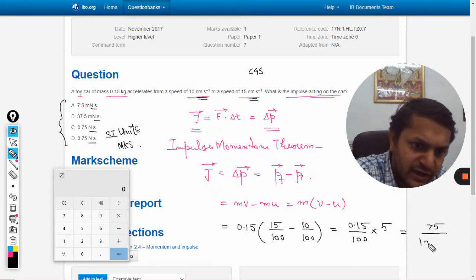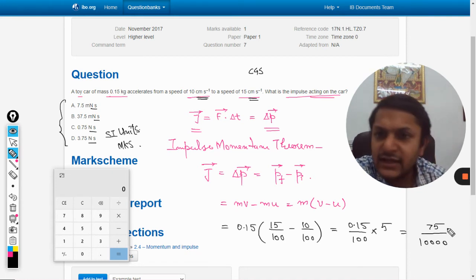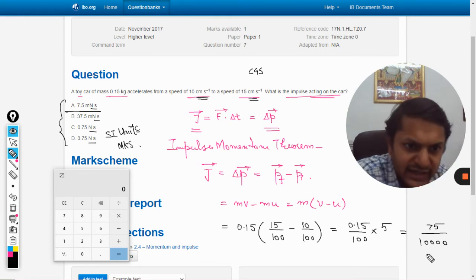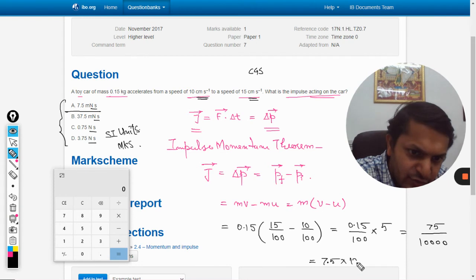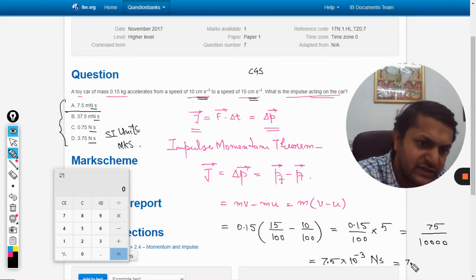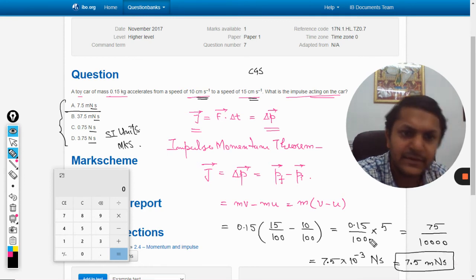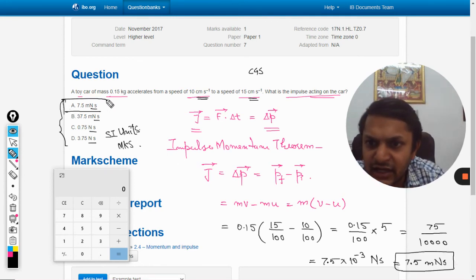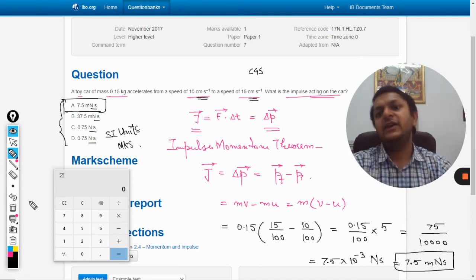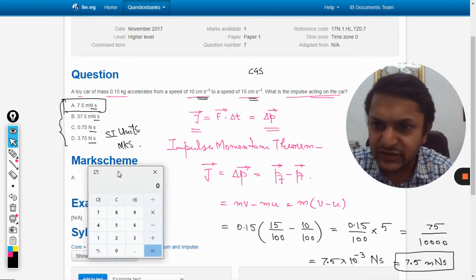75 divided by this, so I think answer will be A, 7.5 milli. So this can be taken as 7.5 into 10 raised to the power minus 3 in SI units, which are newton second. So we can always say the answer will be 7.5 milli newton second. And yes, the answer will be A. We can verify now what is the answer from the mark scheme, and exactly the answer is A.